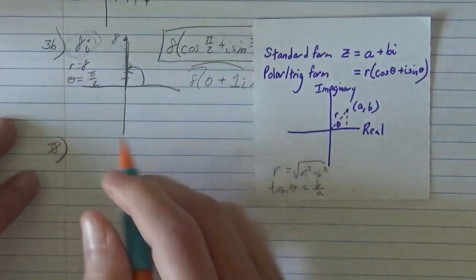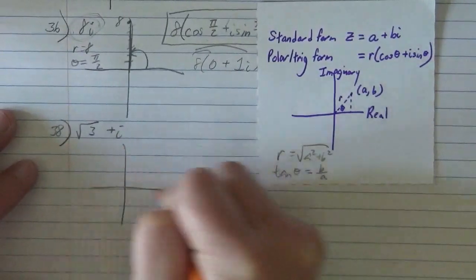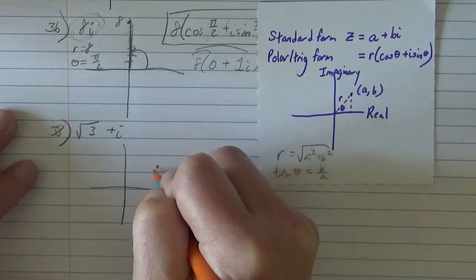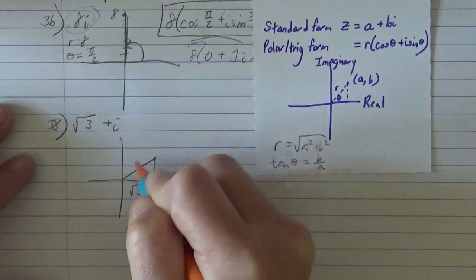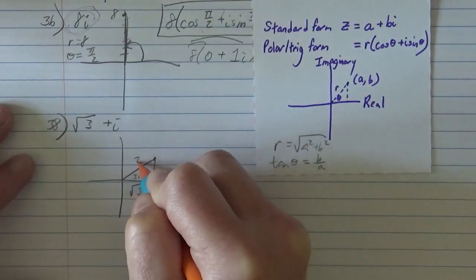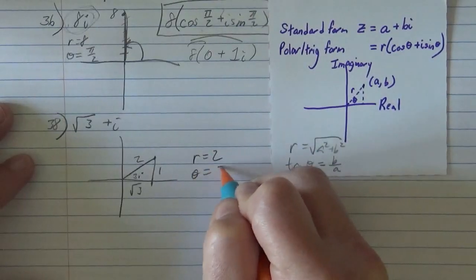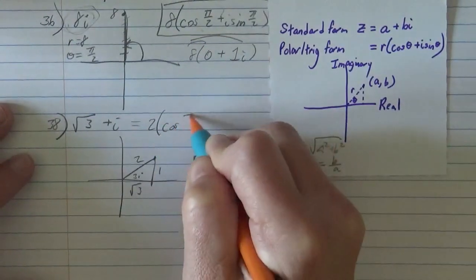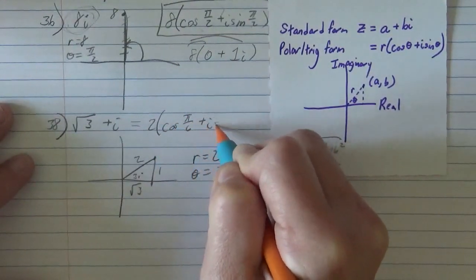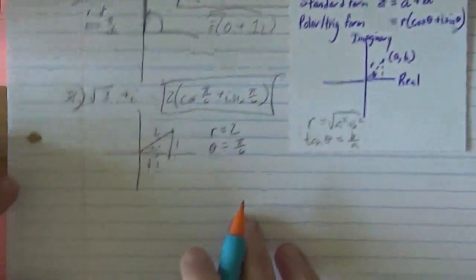We keep going, might as well. We've got root 3 plus i. We graph, root 3 on the real, 1 on the imaginary, root 3, 1. We recognize this as a 30, 60, 90, so that must be 2. If our radius is 2 and our angle is pi 6, then I have 2 cosine pi 6 plus i sine pi 6. And there you have it.